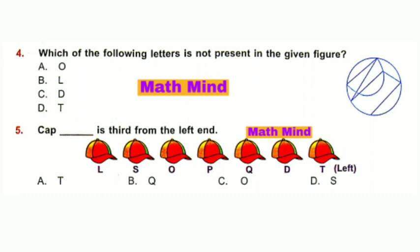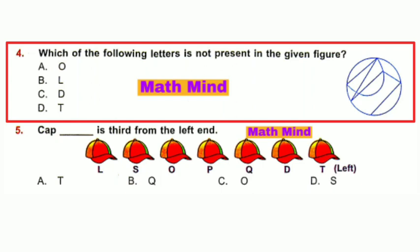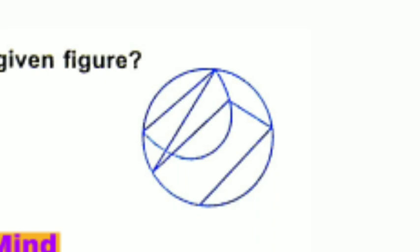Question number 4: Which of the following letters is not present in the given figure? This is D, this is O, this is L. But T cannot be formed.